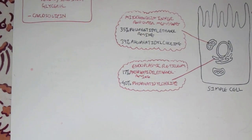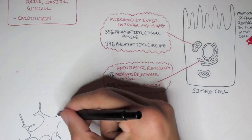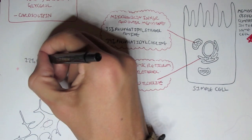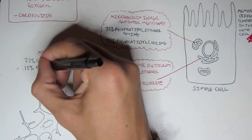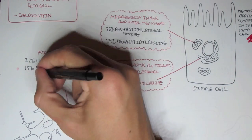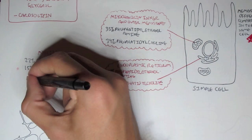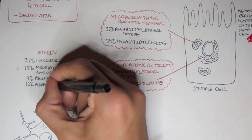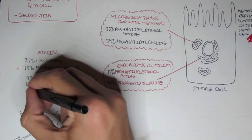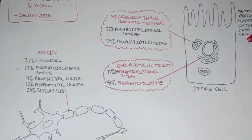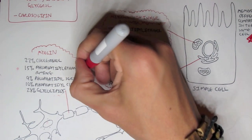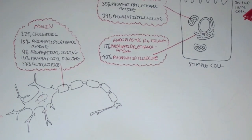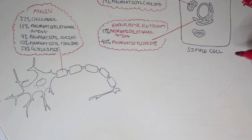You can see how there are varying amounts of different types of lipid membranes within different organelles. Now let's look at myelin of a neuron. Myelin consists of 22% cholesterol, 15% phosphatidylethanolamine, 9% phosphatidylserine, 10% phosphatidylcholine, and 28% glycolipids. So you can see how myelin is obviously completely different because it contains glycolipids, and it needs glucose for the neurons.